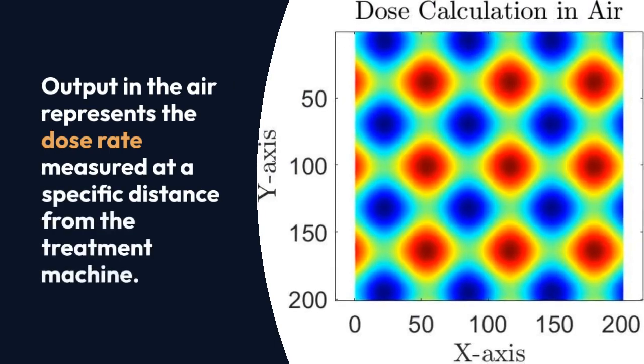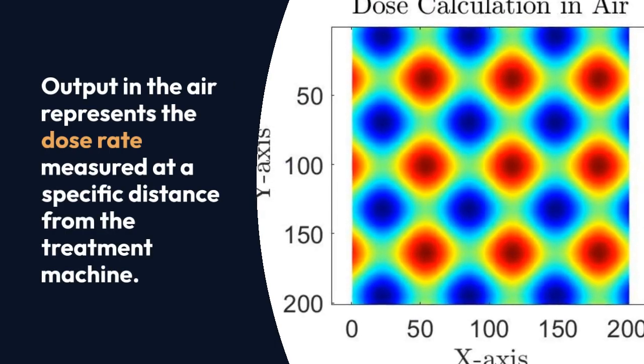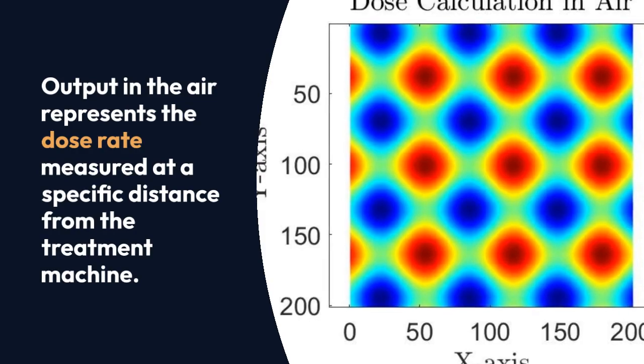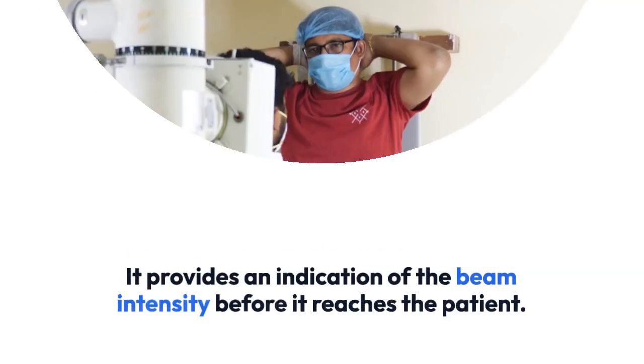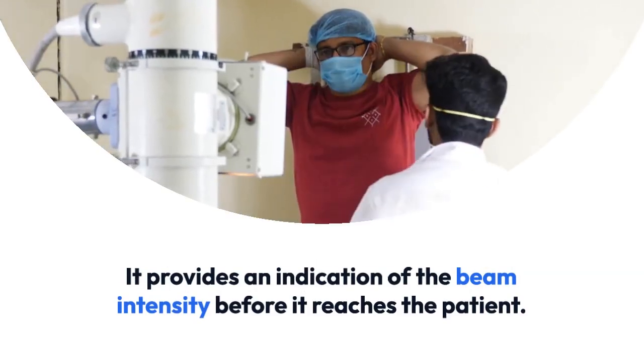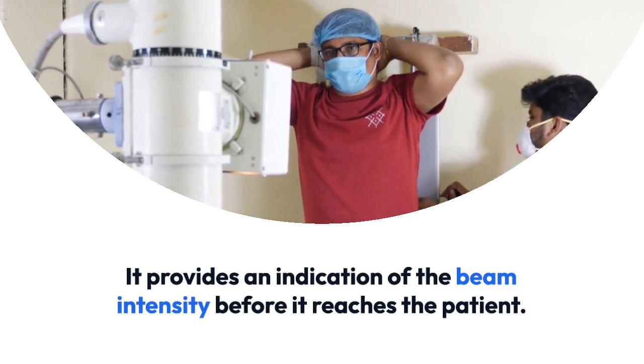Output in the air represents the dose rate measured at a specific distance from the treatment machine. It provides an indication of the beam intensity before it reaches the patient.